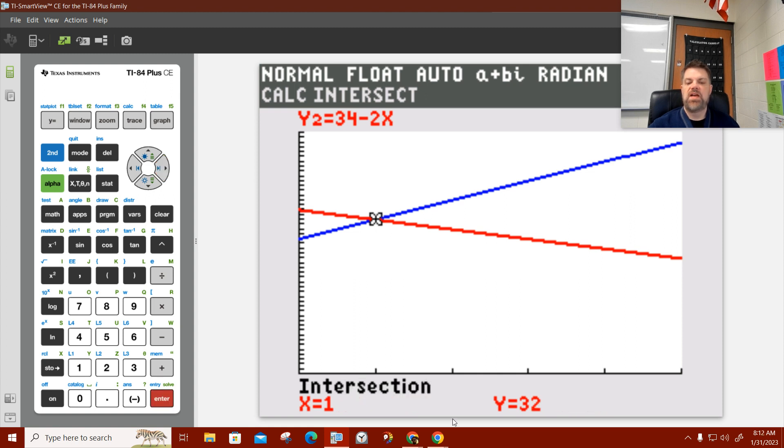It's as close as I can get. Yep. The intersection occurs when x equals 1. Both equations will equal 32 if you let x equal 1. See how I did that?